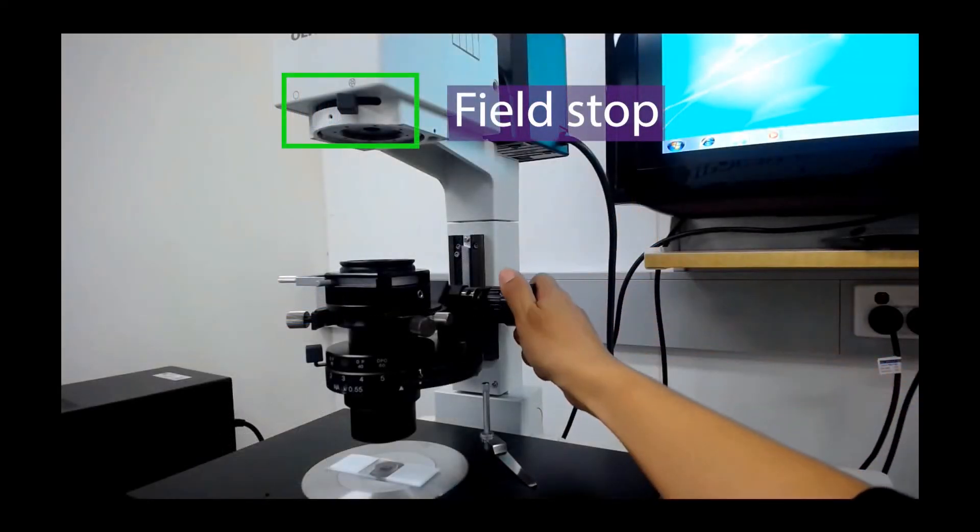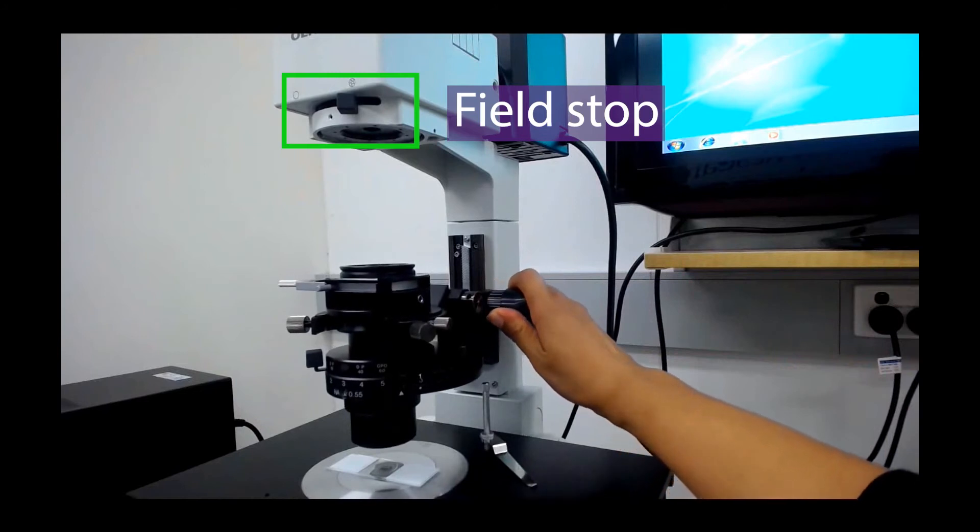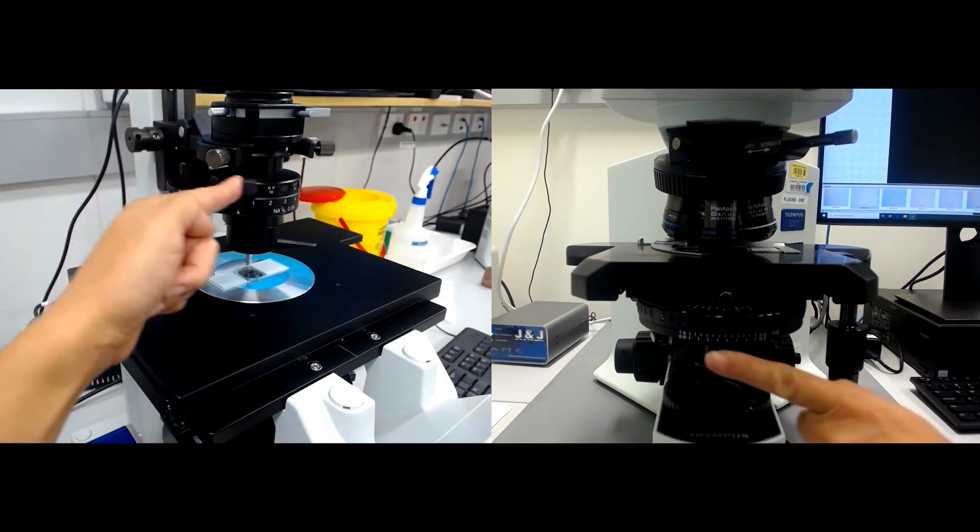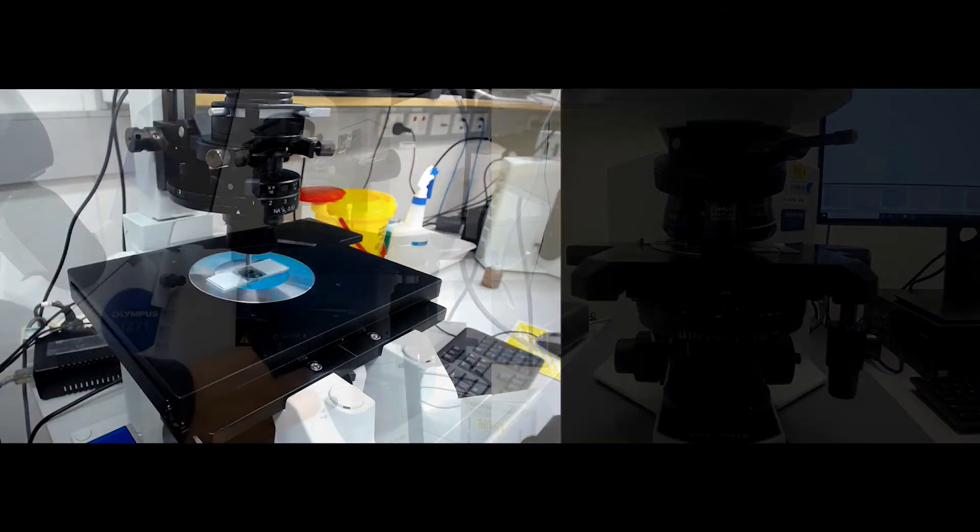Make sure you have adjusted the microscope to provide Koehler illumination. Open the aperture of the condenser to the fully open position, otherwise you will not illuminate your sample.